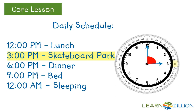It looks like it is exactly half of 180 degrees. If I decompose 180 into two equal parts, each would be 90. When the clock shows 3 o'clock, it shows a 90 degree angle.